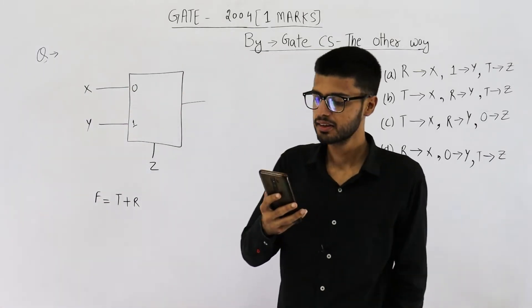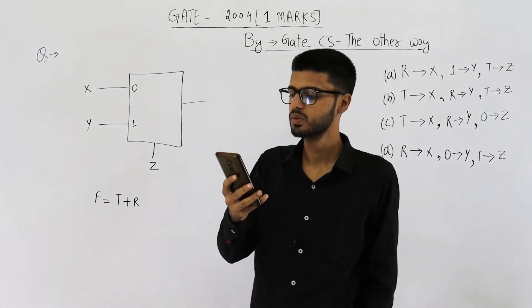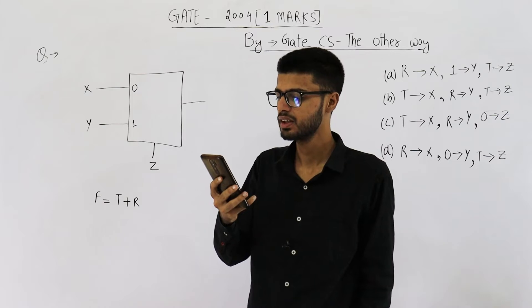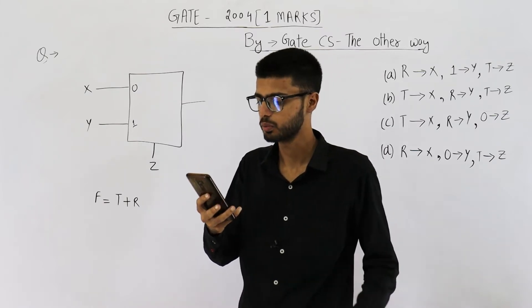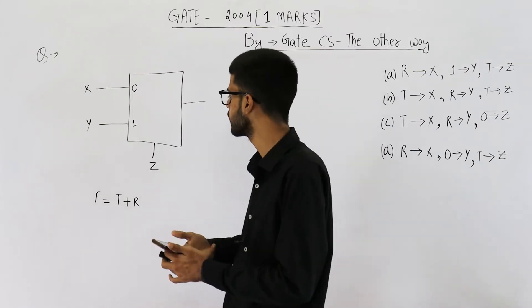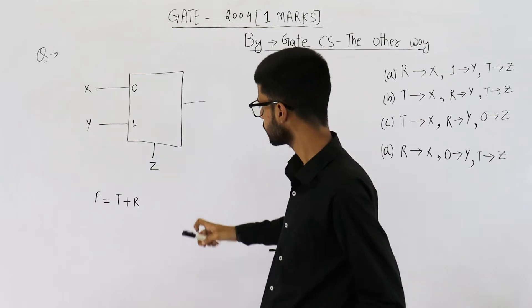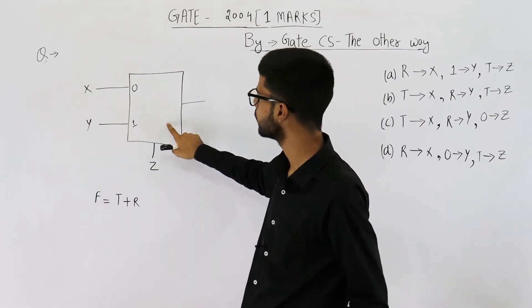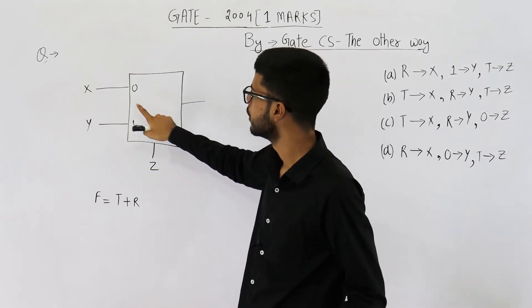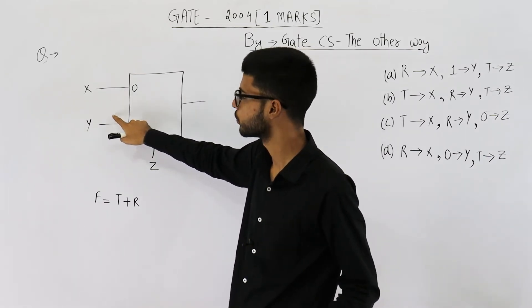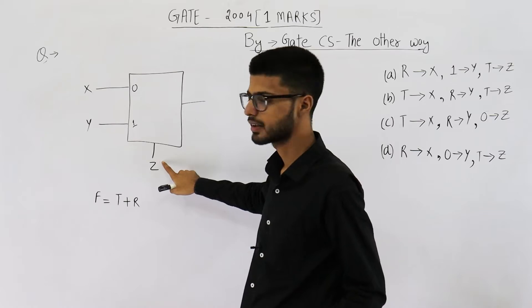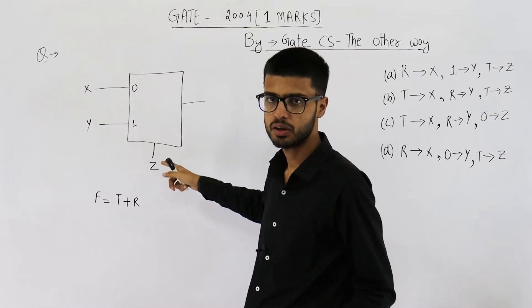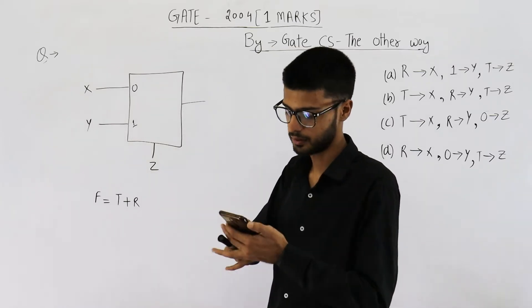They are saying: consider a multiplexer with x and y as data inputs and z as control input. I have drawn a multiplexer with two inputs x and y and one select line or control line z.